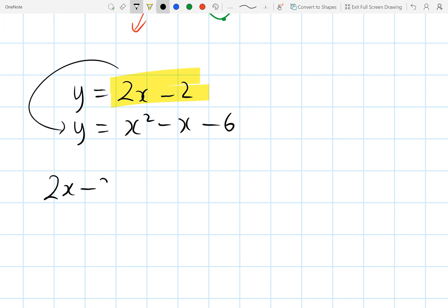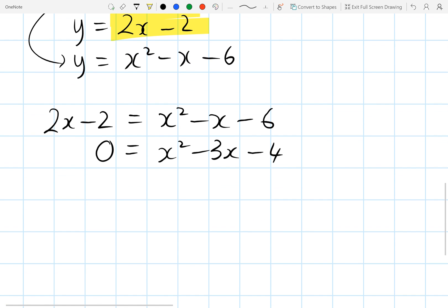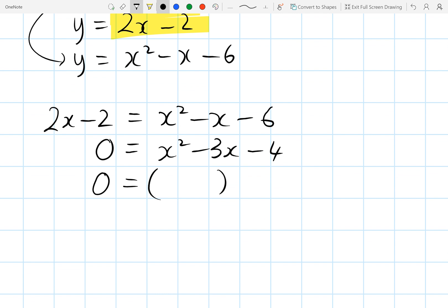So that gives us 2x minus 2 equals x squared minus x minus 6. So rearranging, we get 0 equals x squared minus 3x minus 4. And we can factorize that. So we're looking for two numbers that add to negative 3 but times to negative 4. So that would be negative 4 and plus 1. So two possible x results are 4 and x equals negative 1.